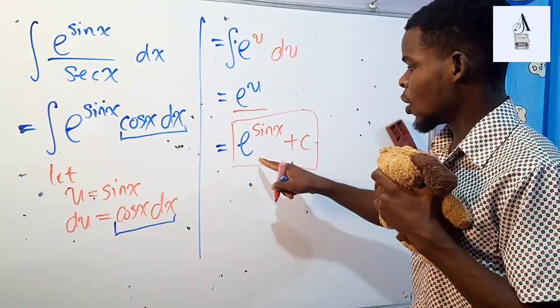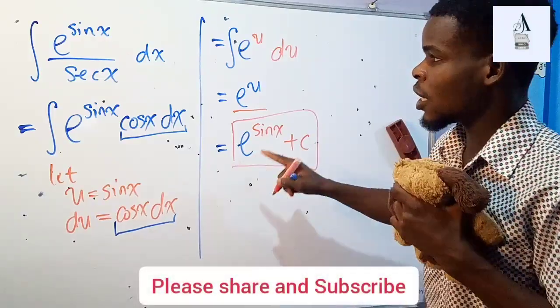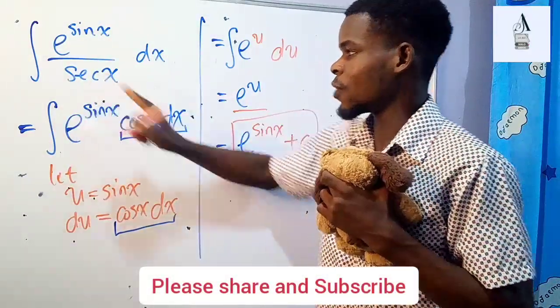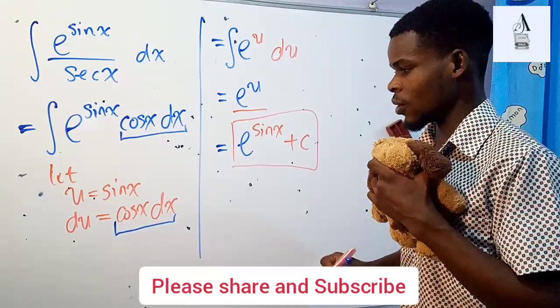So how do you know if this is correct? Well, if you differentiate this, it should give you this integrand because the antiderivative of this integrand is giving us this result.